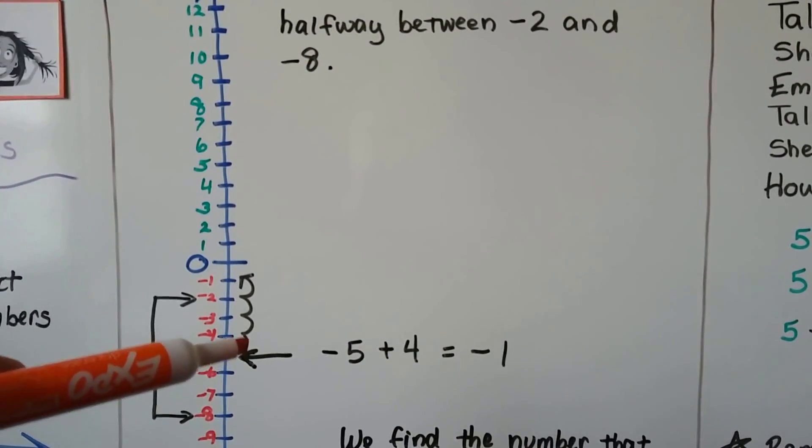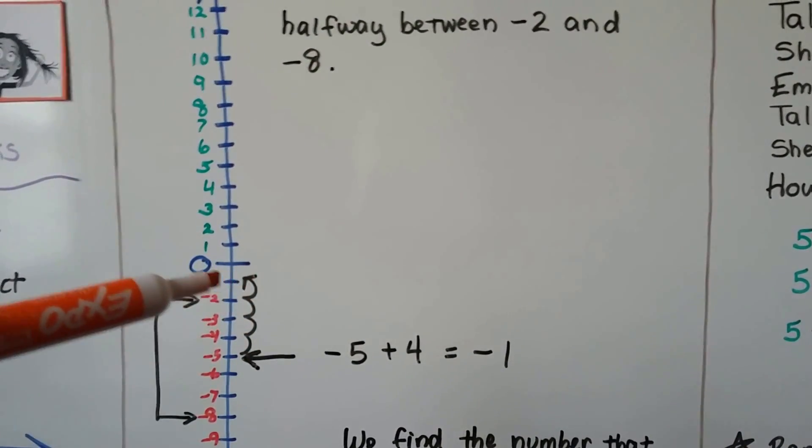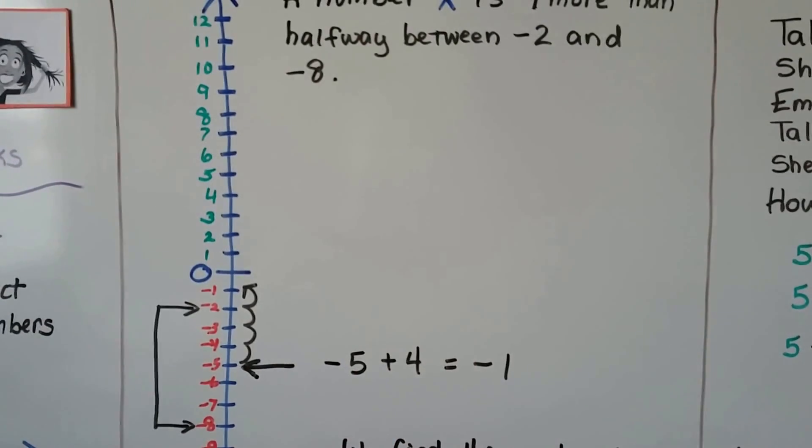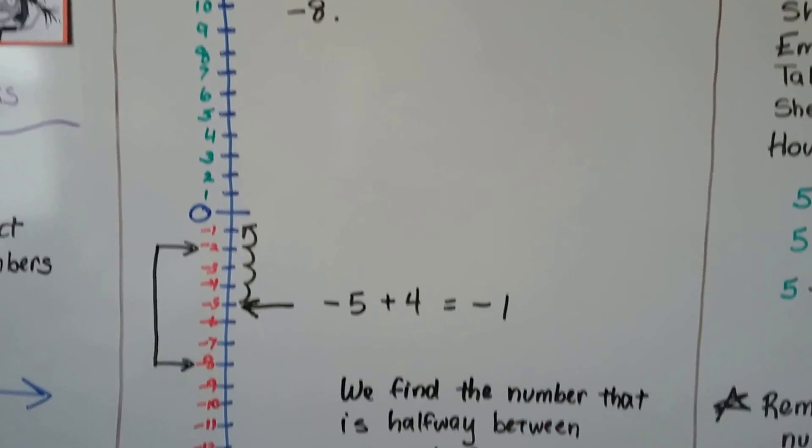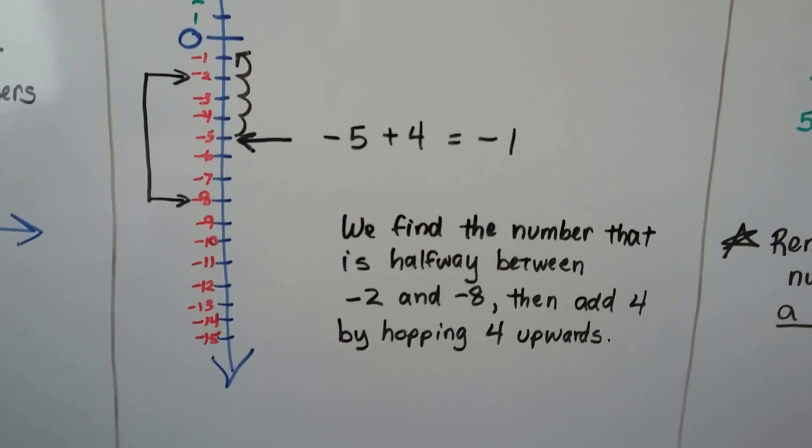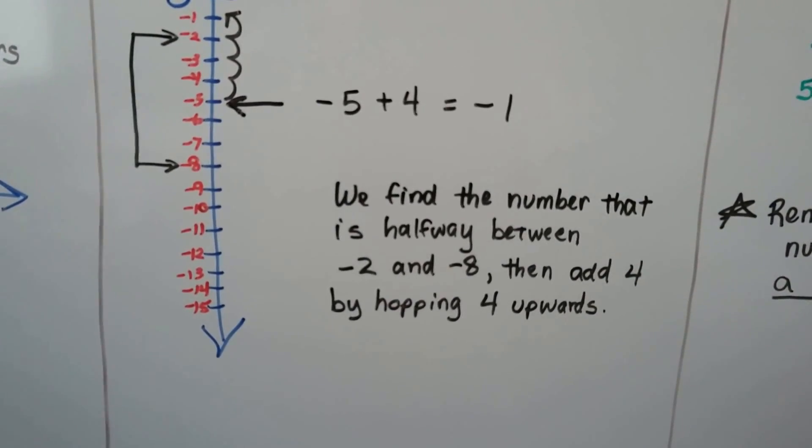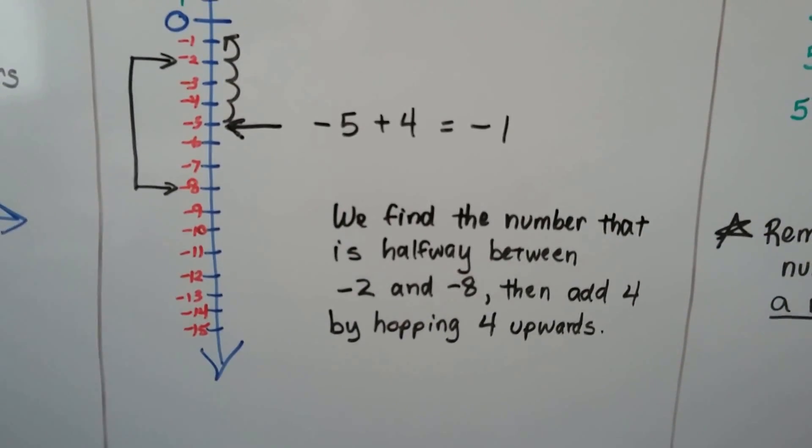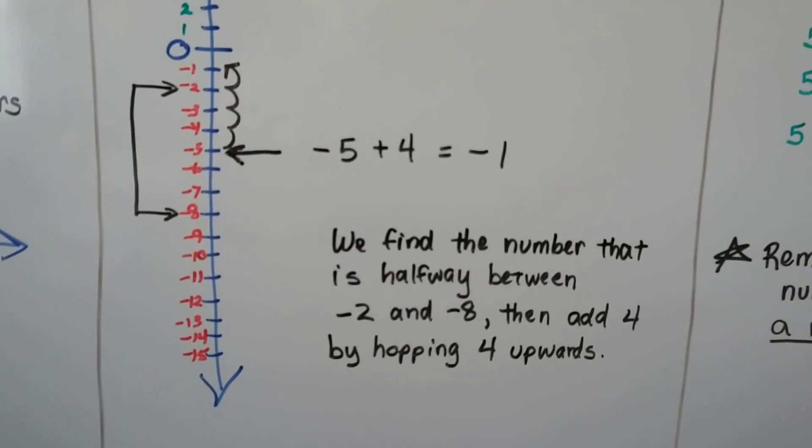And it says it's 4 more than that. So we're going to hop up 4 times. 1, 2, 3, 4 and we're at a negative 1. We find the number that's halfway between the negative 2 and negative 8 and then add 4 by hopping 4 upwards because we're going positive. It's 4 more.